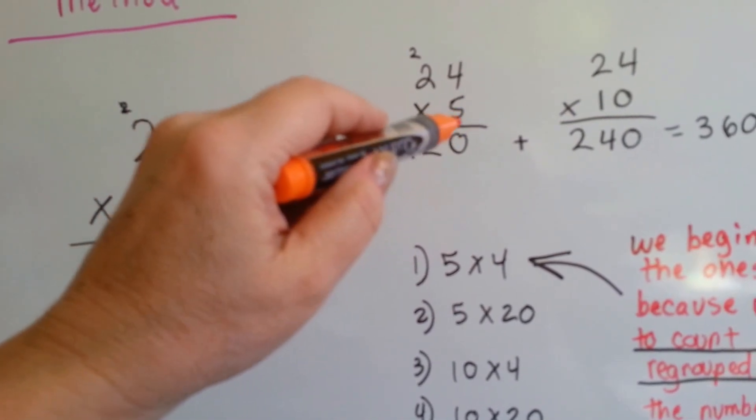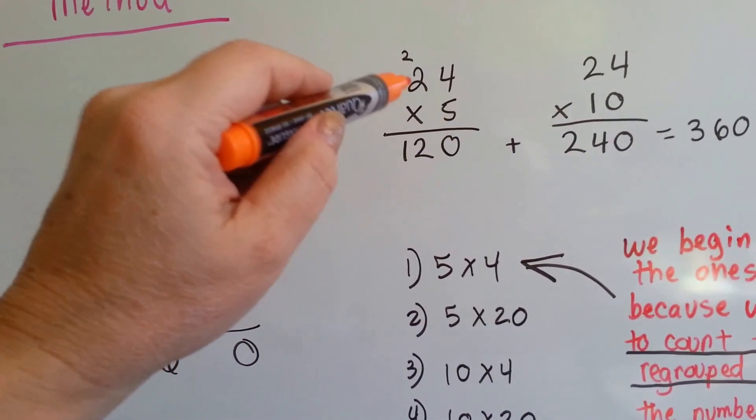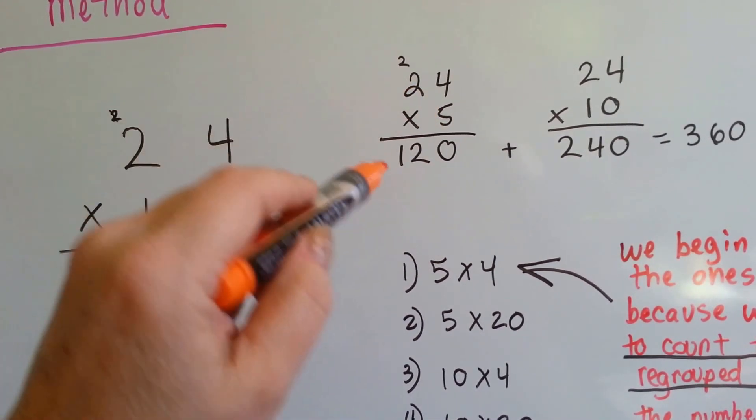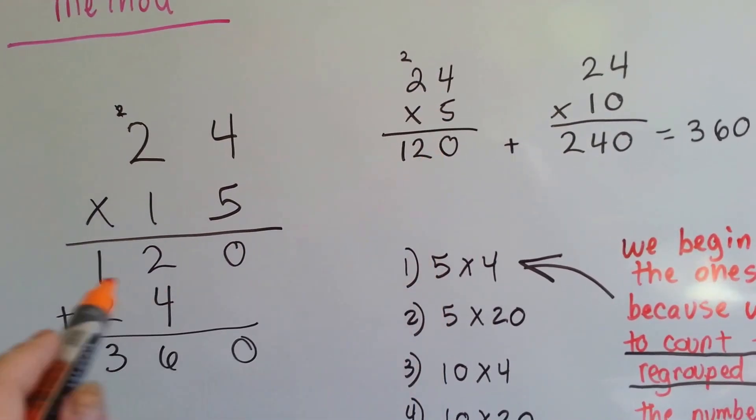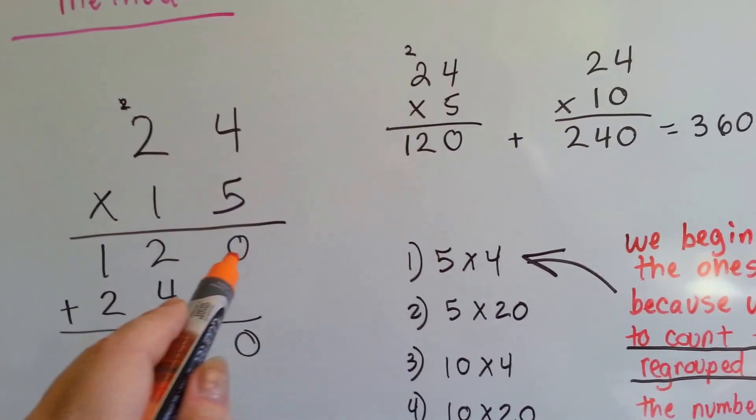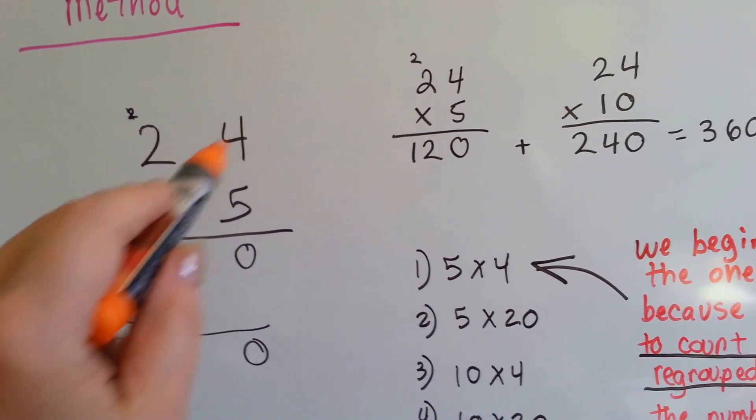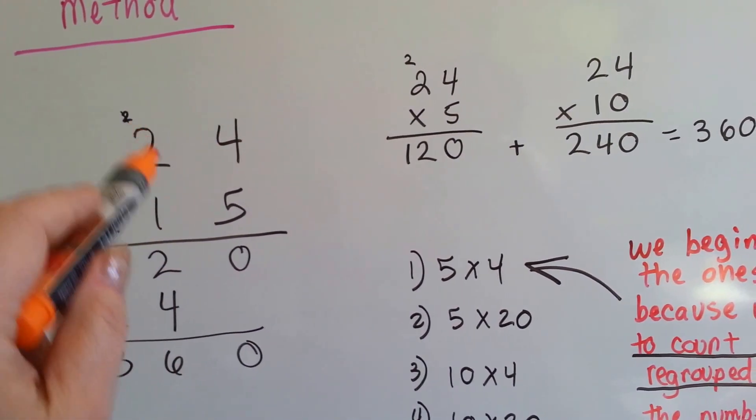Then we do 5 times 2, which is 10, and we add the carried over number, the regrouped number, 10, 11, 12. That gives us 120. Now it's going to be the 1's turn to be distributed to each number, first to the 4 and then to the 2.